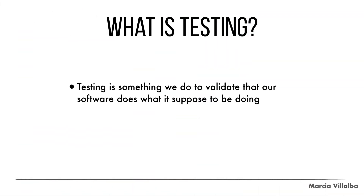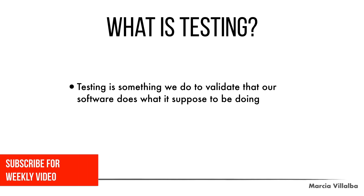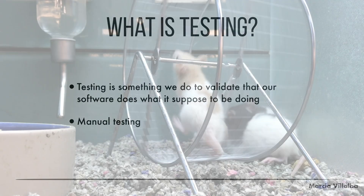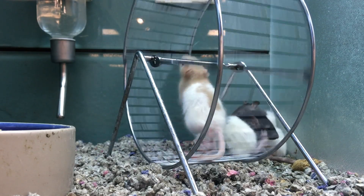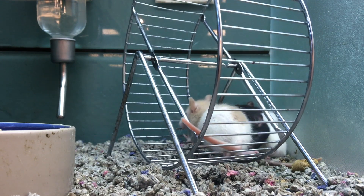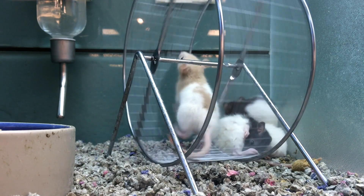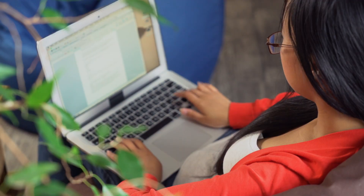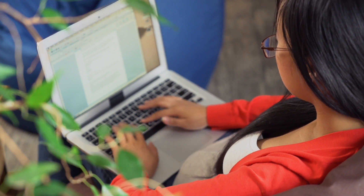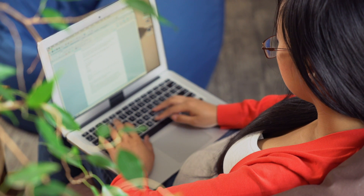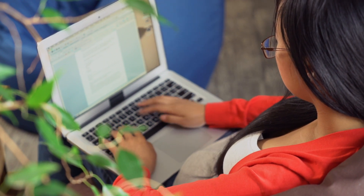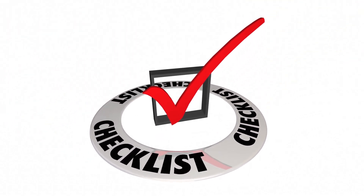Let's start talking about what testing is and what it means. Testing is something we do to validate that our software does what it's supposed to be doing. One way of testing is going around manually in our software, visiting all the features and trying them one by one every time we make any modification — whether we touched that feature or not. I had a job where my job was basically to test things this way. We had a checklist and we needed to go through everything one by one to make sure it was all working every time a new release came out.